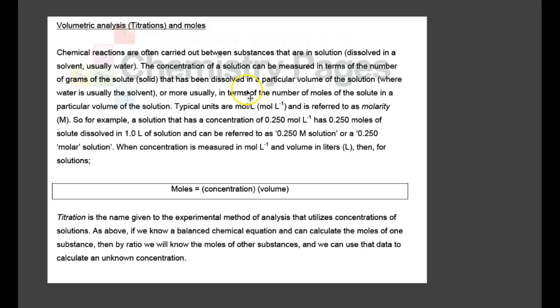Volumetric analysis, or titrations and moles. Chemical reactions are often carried out between substances that are in solution, dissolved in a solvent, usually water. The concentration of a solution can be measured in terms of grams of solute dissolved in a particular volume, or more usually in terms of moles of solute in a particular volume of solution. Typical units are moles per liter and is referred to as molarity, capital letter M. For example, a solution that has a concentration of 0.250 moles per liter has 0.250 moles of solute dissolved in one liter of solution, and can be referred to as 0.250 molar.